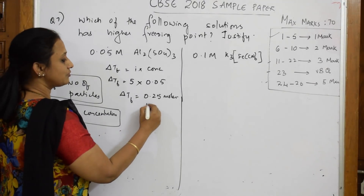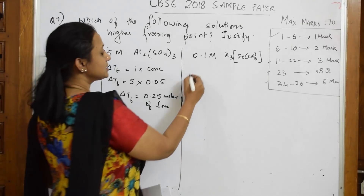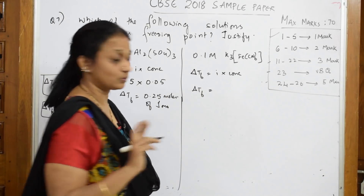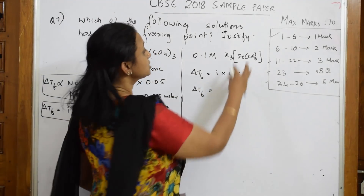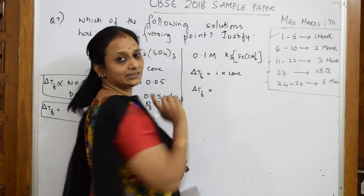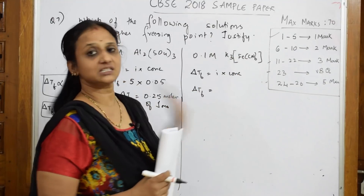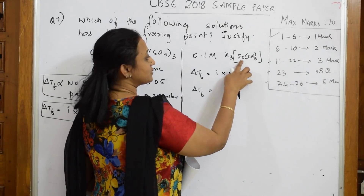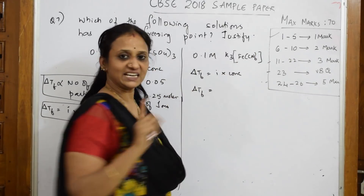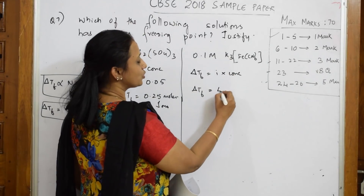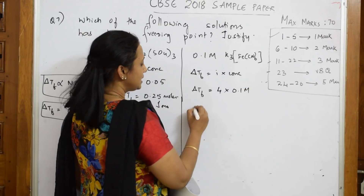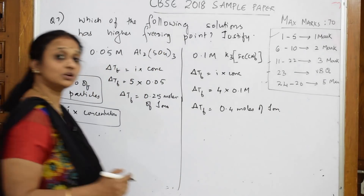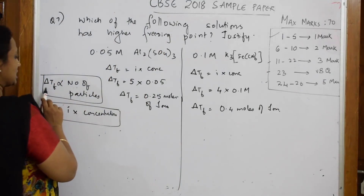Now for the second solution, ΔTf = i × concentration. Be very careful here because this is a coordination compound. The entire coordination sphere is one entity, and what is outside is one entity. So together we get 1 + 3 = 4, not 6. Most students take 6 + 1 + 3 and go wrong. So i = 4, concentration = 0.1 molar, ΔTf = 0.4 moles of ions.